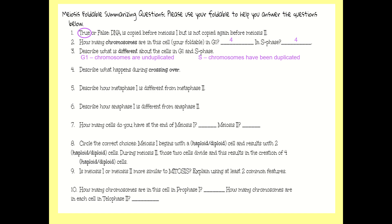In prophase 1 something special happens called crossing over. You should have circled that at the location it occurs on your prophase 1 diagram. What happens is the homologous partners swap pieces of themselves — they literally break off the same pieces and swap them with each other, and that just creates more genetic variation.